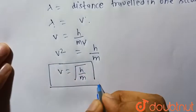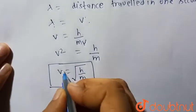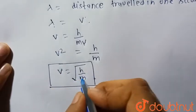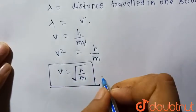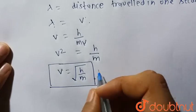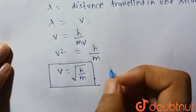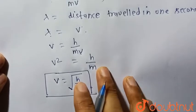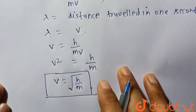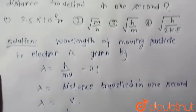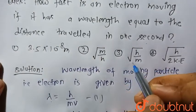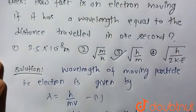Hence, the velocity of the electron will be equal to the under root h by m. Hence, option third is the correct choice.